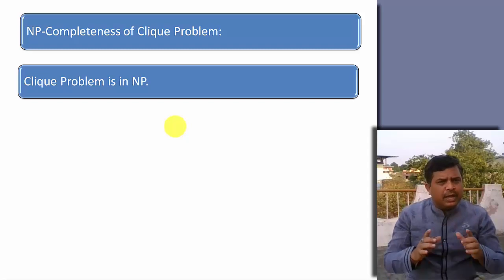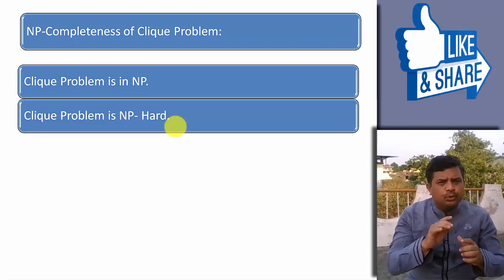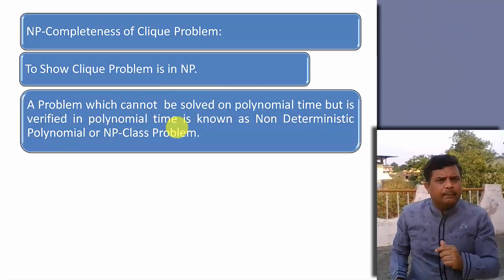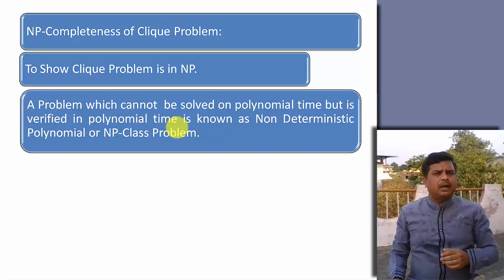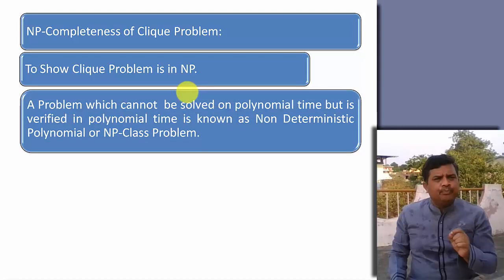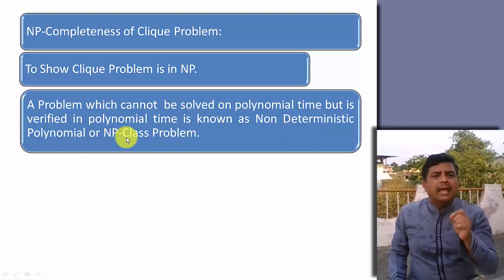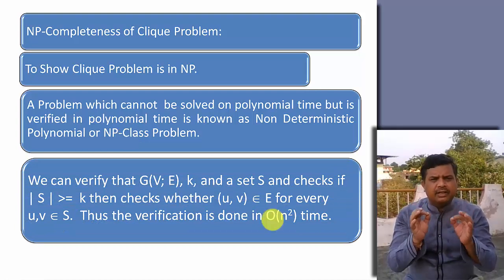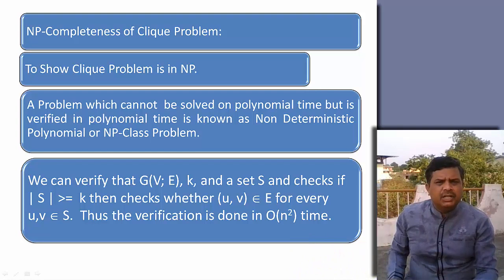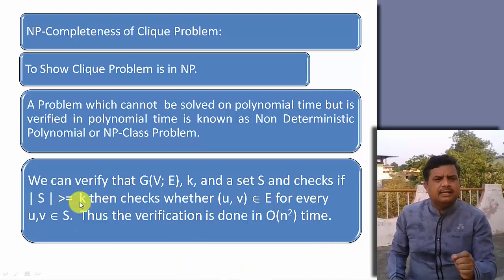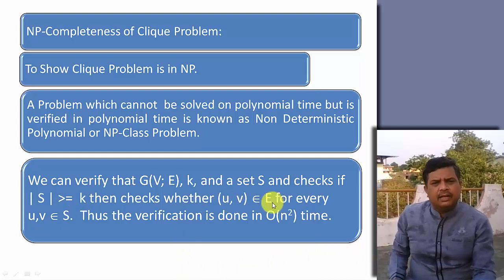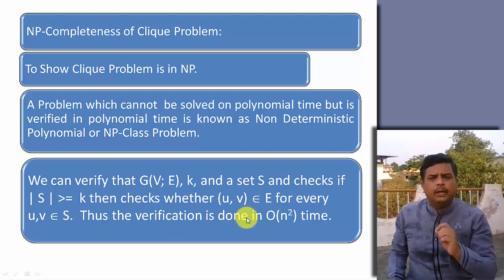So what we have to do is show that clique is in NP, and show that clique is NP hard. A problem which cannot be solved in polynomial time but can be verified in polynomial time is known as a non-deterministic polynomial or NP class problem. We can verify that if a graph G with a set of vertices and K is any number, and the number of elements in set S is greater than or equal to K, then check whether every pair U belongs to E for every U belonging to S. Thus, the verification can be done in O(n²) time.